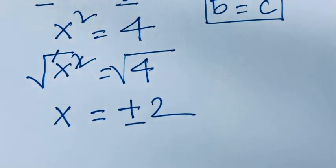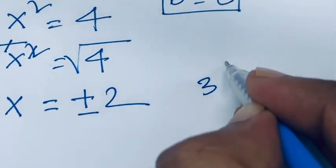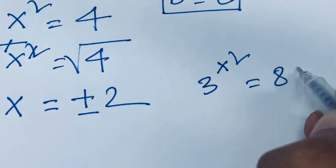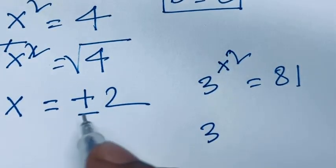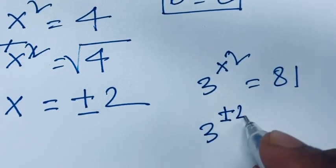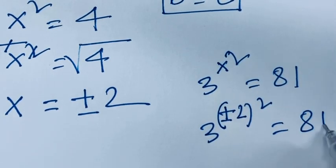Now let's prove our equation 3x squared equals 81. We know that x equals plus or minus 2, so 3 times plus or minus 2 to the power 2 equals 81.